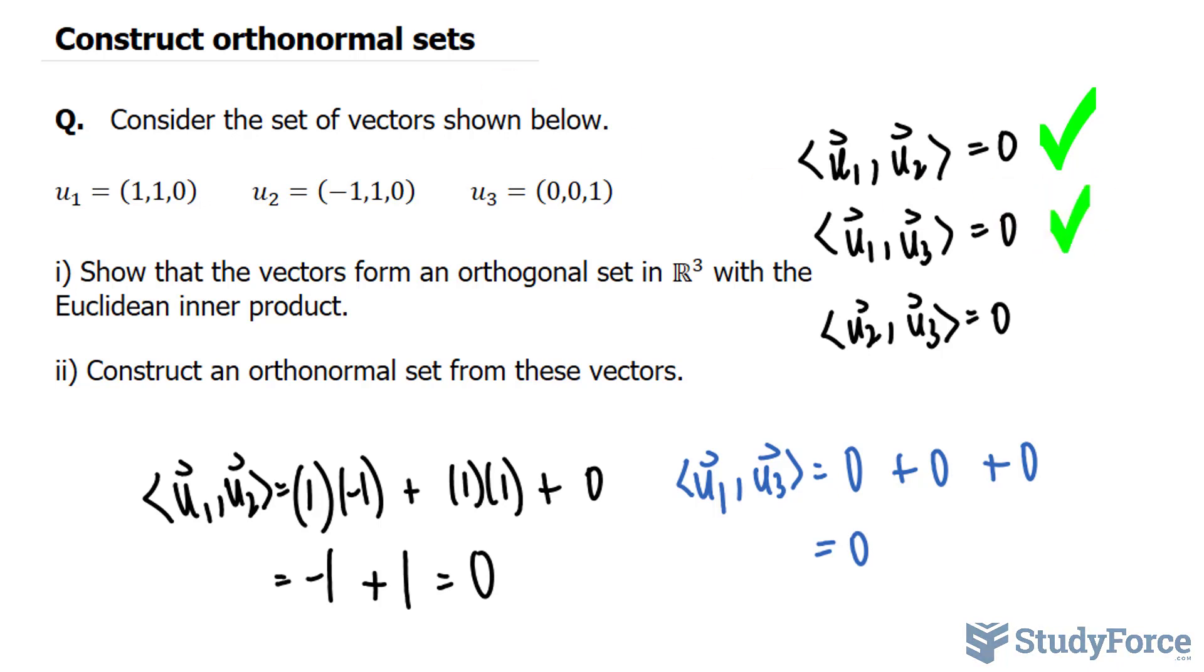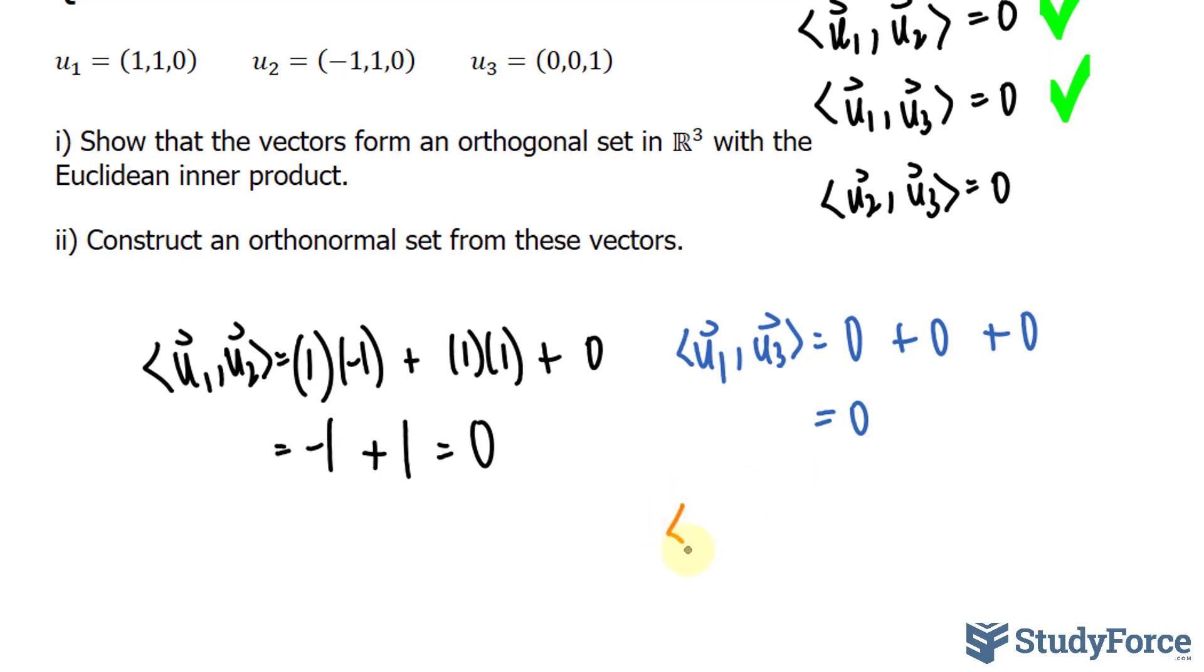And lastly, let's find the inner product of u₂ and u₃. We have negative one times zero, zero. Again, zero and again, zero. So another easy proof. That is equal to zero. So all three of these are, in fact, orthogonal.